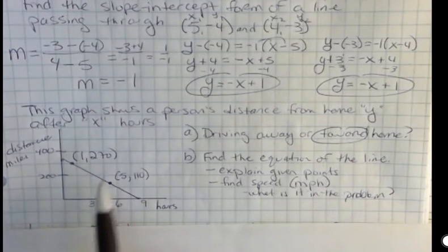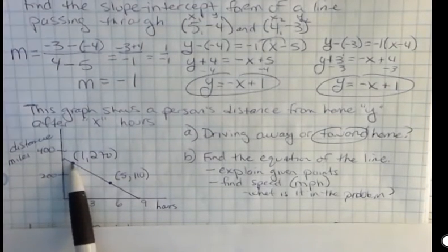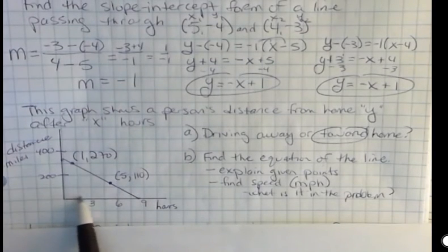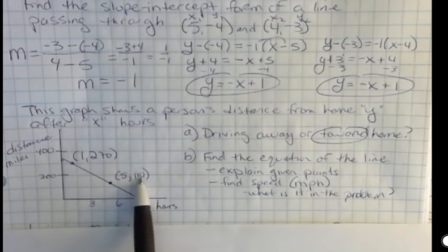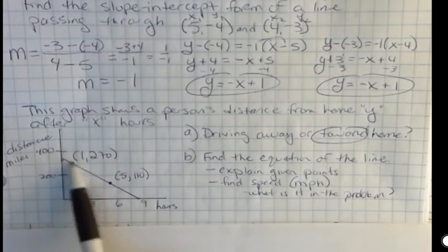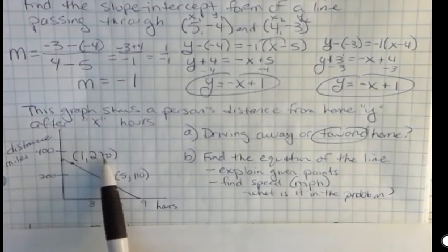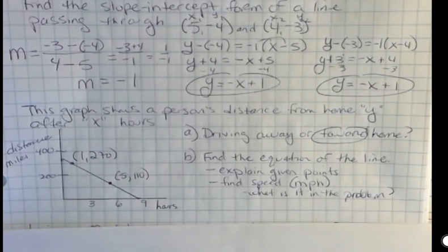And so those points mean this: 1,270 means after one hour, they were 270 miles from home. And after five hours, they were 110 miles from home. So if they ask you to explain the points, you have to be able to say, what is the x coordinate mean, and what is the y coordinate mean?